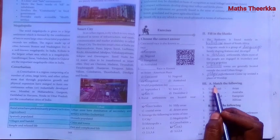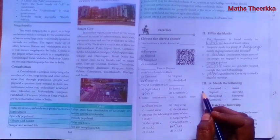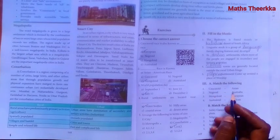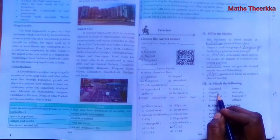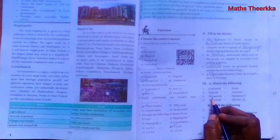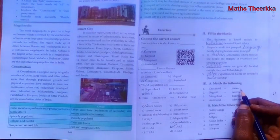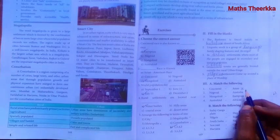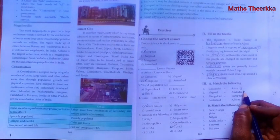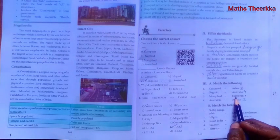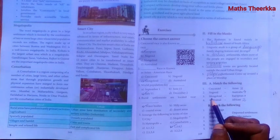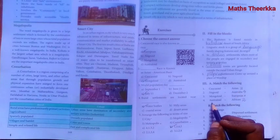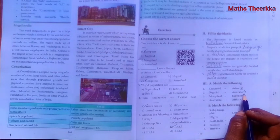Third section: Match the following. Caucasoid — European race. Negroid — African race. Mongoloid — Asian race. Australoid — Australian race.